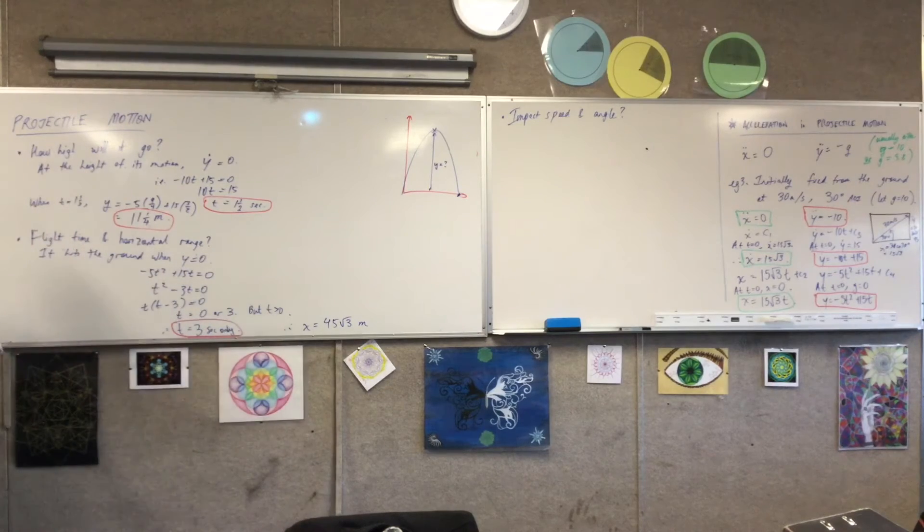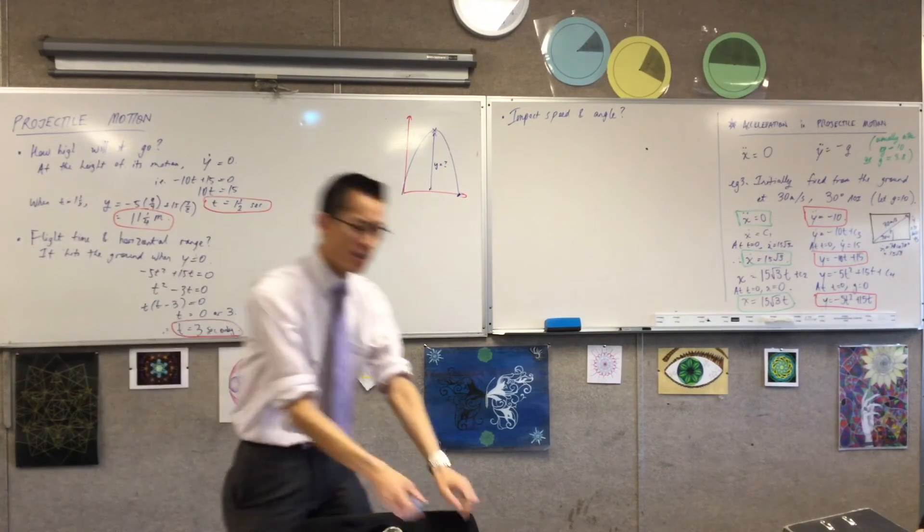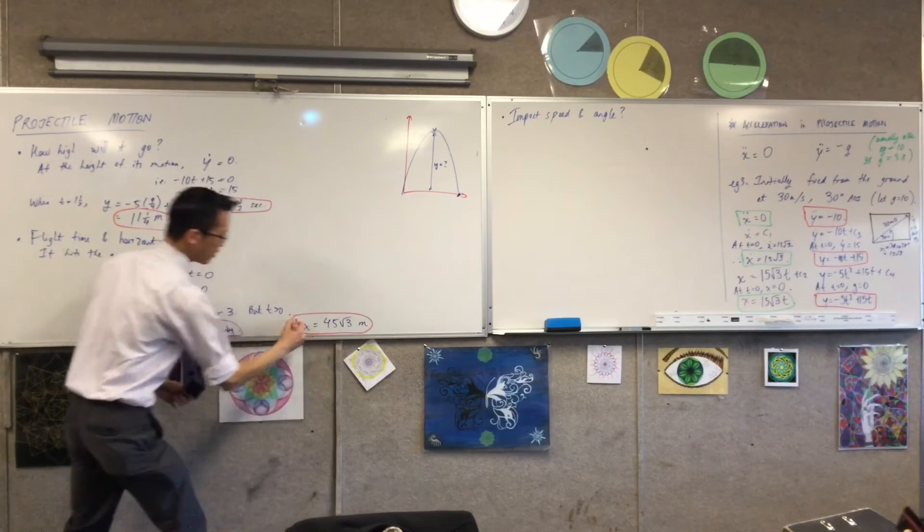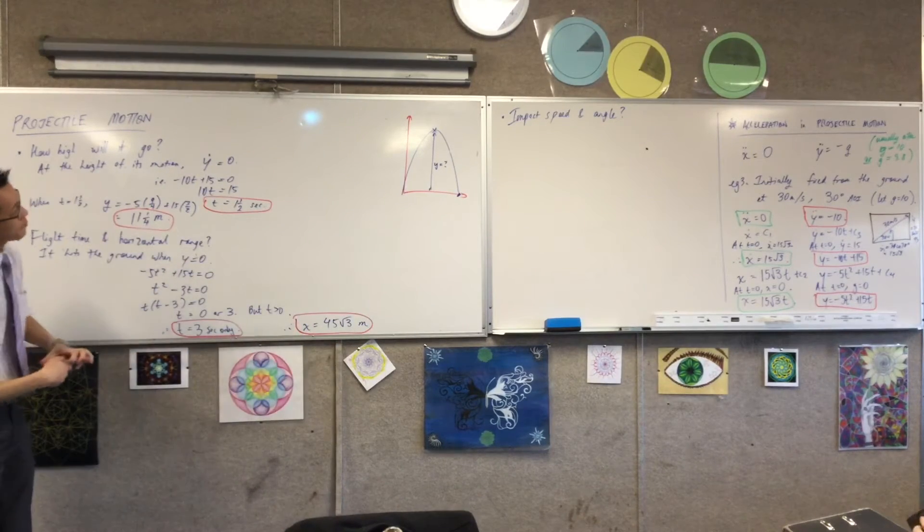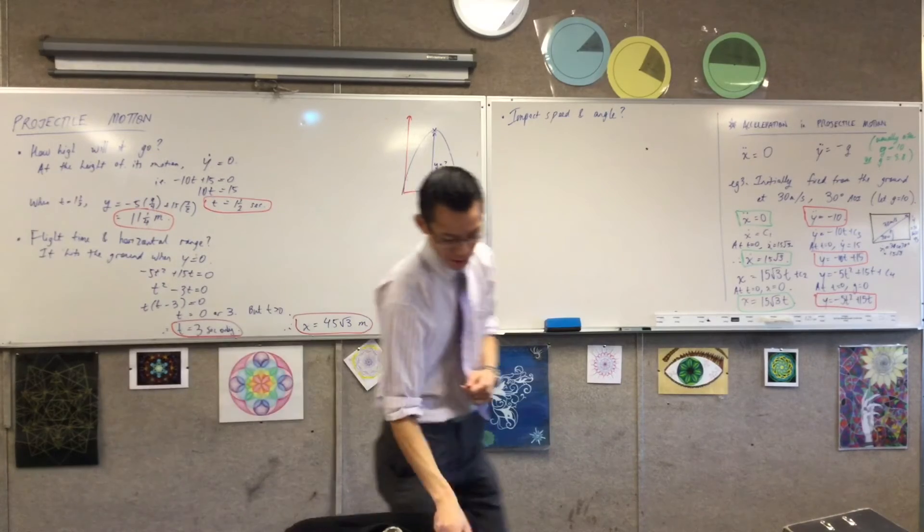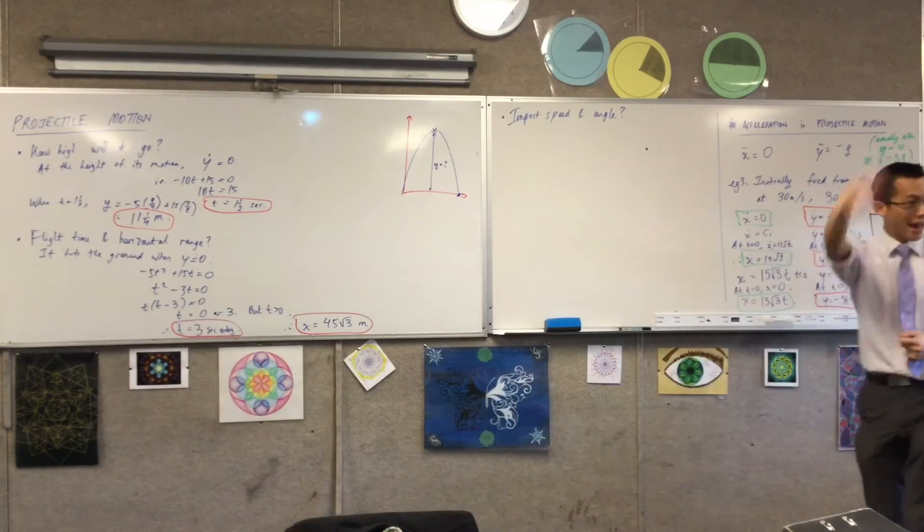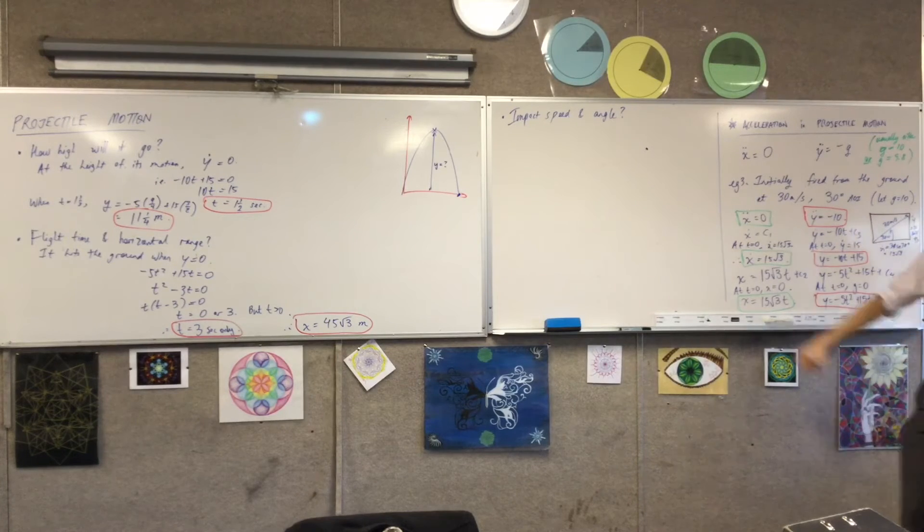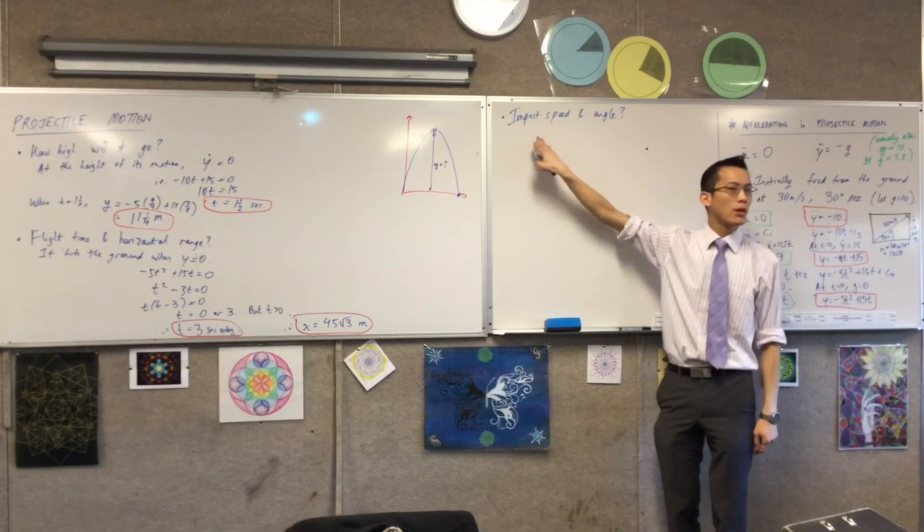So you can see here, again, remember I said that the equations are easy. It's working out which equations you need to use and what you need to let them be equal to. Last question we got here is, we know how high it went, we know how long it took to get to where it's going to get to at the end. This last question is, what's it doing when it arrives?